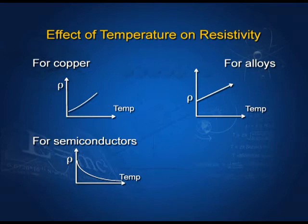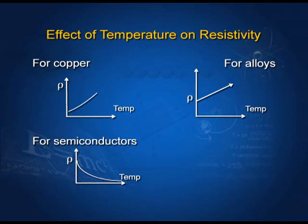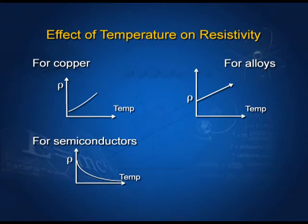Effect of temperature on resistivity: for copper, resistivity increases slowly at first but rises more rapidly with large increases in temperature. For alloys, resistivity remains almost constant even at high temperatures. For semiconductors, resistivity decreases with rise in temperature. The following graphs represent the variation of resistivity with temperature.